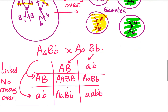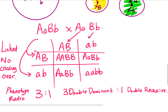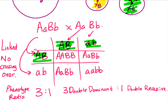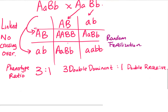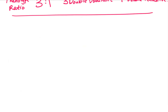With no crossing over, the genes don't get exchanged. Your gamete choices are restricted to Big A Big B or little a little b. With random fertilization, the ratio will be 3 to 1 — 3 out of 4 will be double dominant and 1 out of 4 will be double recessive phenotype. This is because Big A is always associated with Big B in the gametes, and little a is always associated with little b.